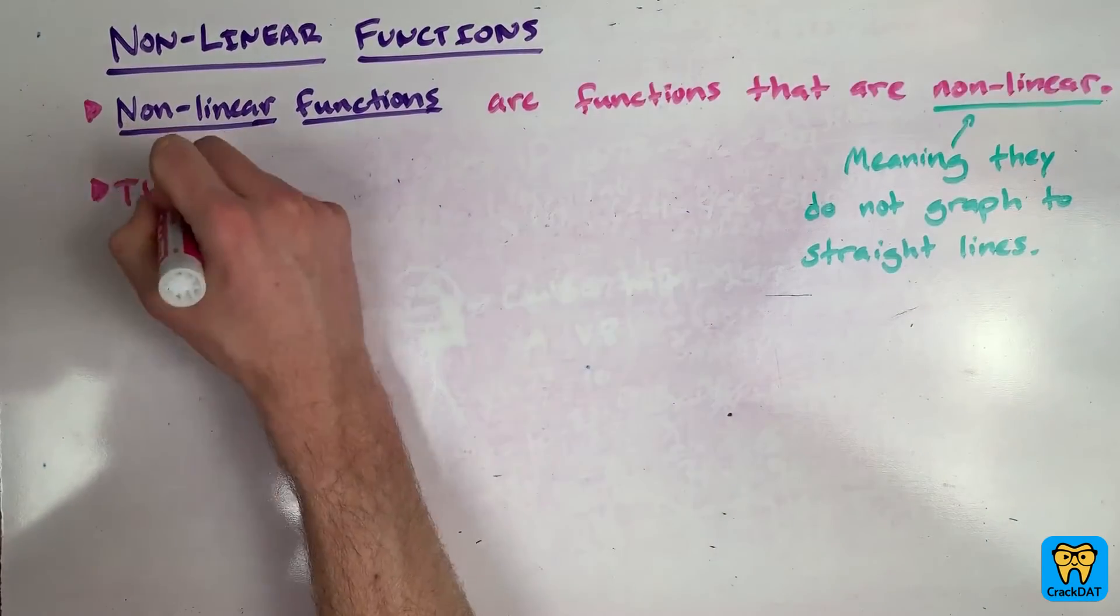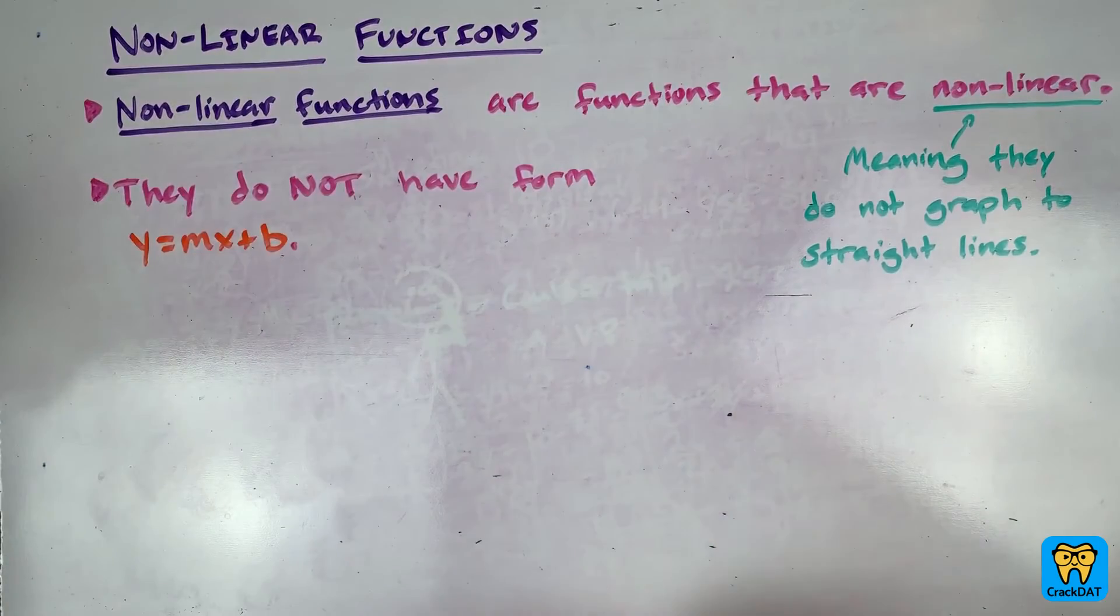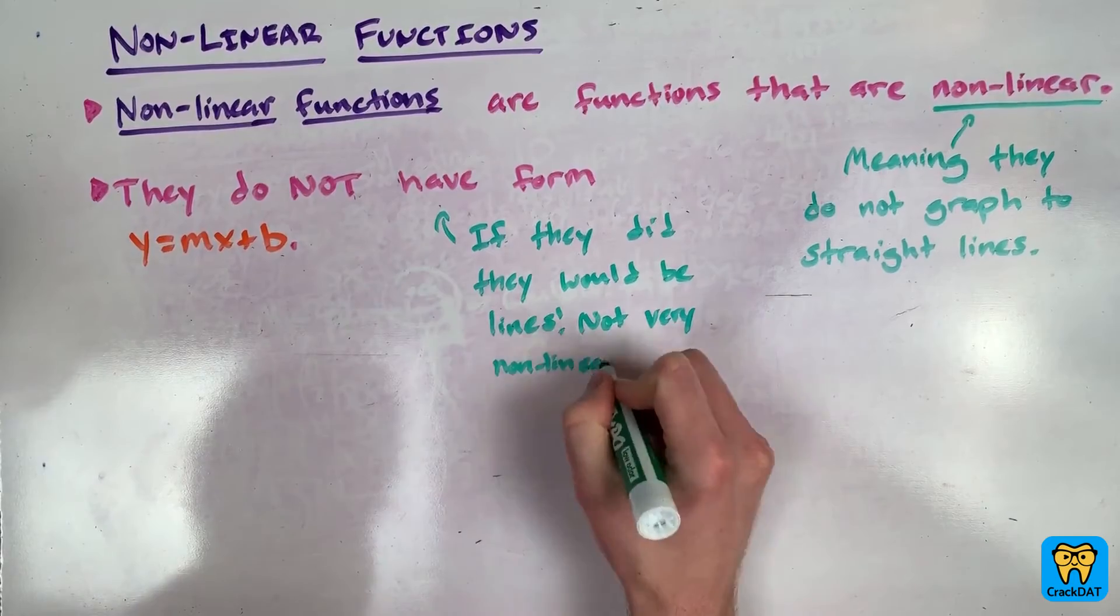So in particular, they do not have the form y equals mx plus b, since that is the general form of equations which graph to lines, the exact opposite of what we're trying to do here.